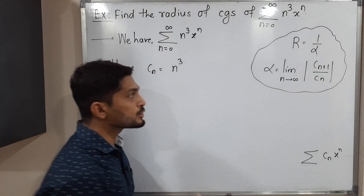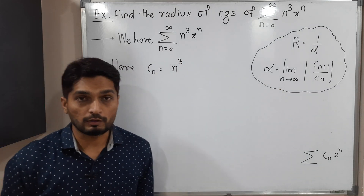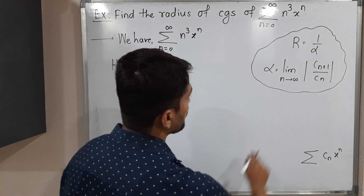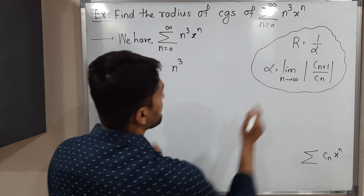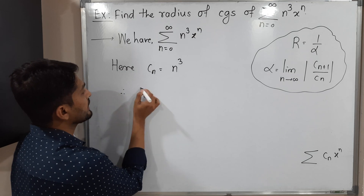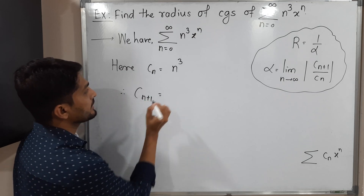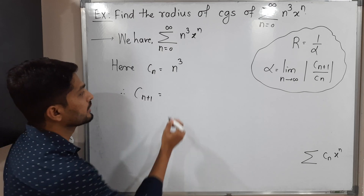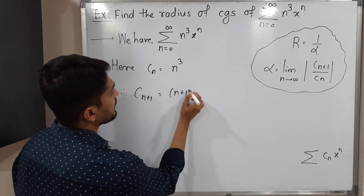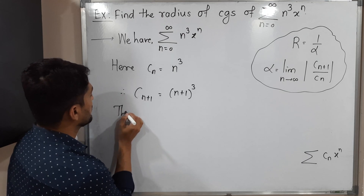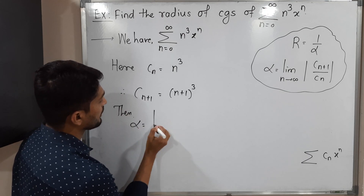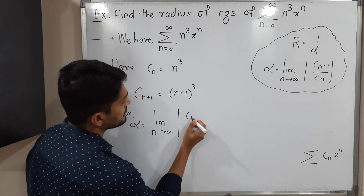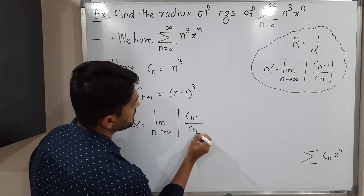There is one more formula to find alpha, but here I am using this one. We already have cₙ. We also need c_{n+1}, which can be easily obtained by replacing n with n+1. Replacing n by n+1, we get c_{n+1} equals (n+1) cubed. Now let us find the value of alpha using the formula: limit as n tends to infinity of the modulus of c_{n+1} over cₙ.